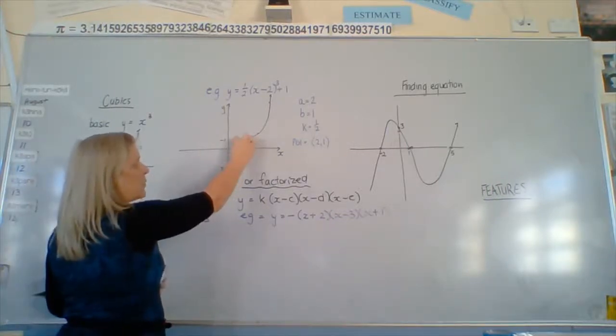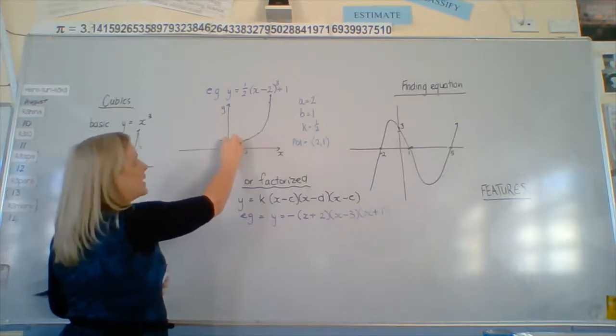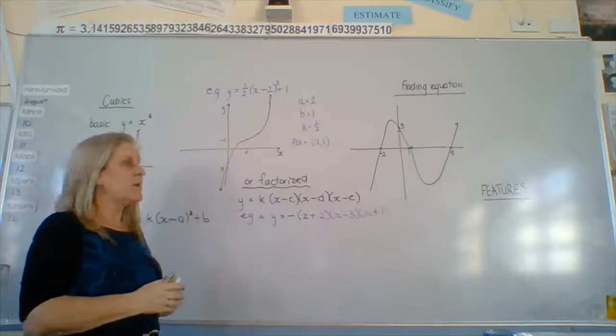So the 3 is the y-intercept. 2 from here - 1, 2. And half of 8 is 4: 1, 2, 3, 4.